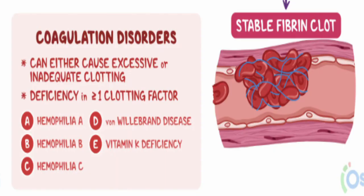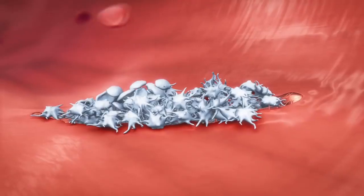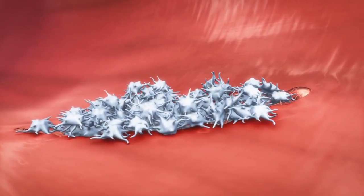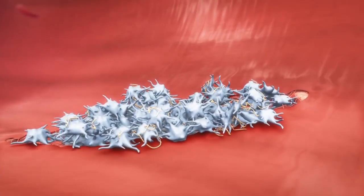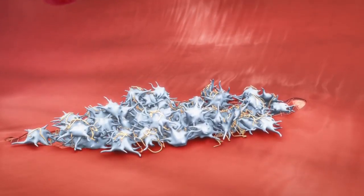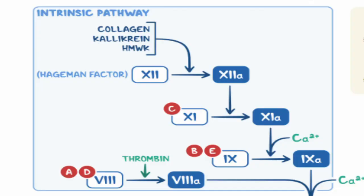Von Willebrand disease is the most common bleeding disorder and is characterised by a deficiency in von Willebrand factor due to an autosomal dominant genetic mutation. The von Willebrand factor is mostly involved in primary haemostasis where it helps platelets stick together. The factor also plays a role in secondary haemostasis by helping stabilise factor 8 in the intrinsic pathway. Factor 8 and von Willebrand factor are two distinct but related glycoproteins that circulate in plasma as a tightly bound complex.